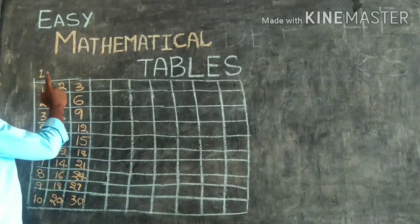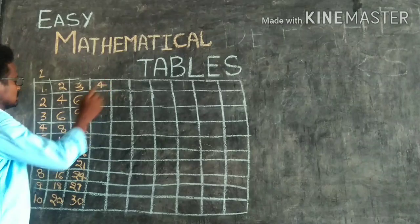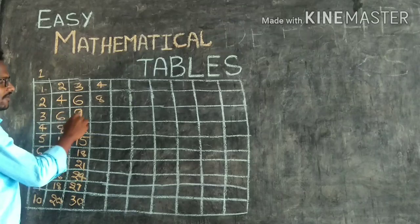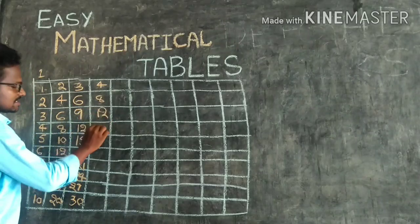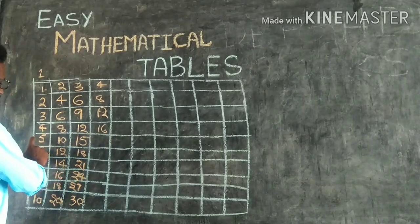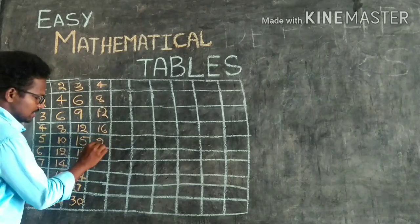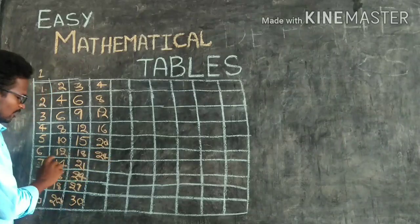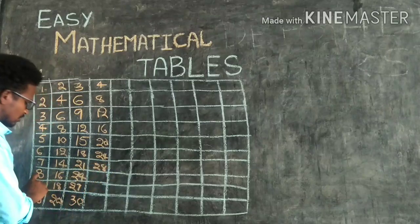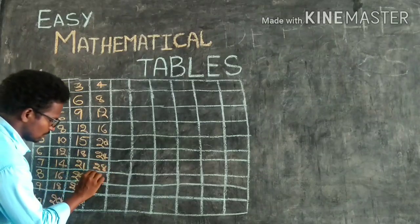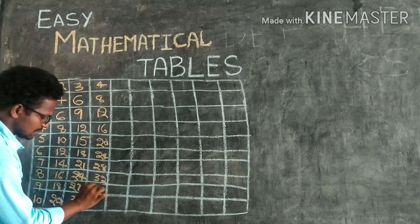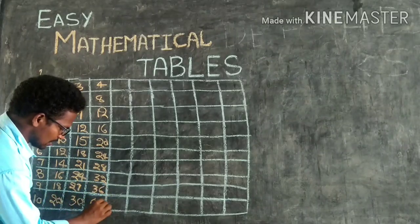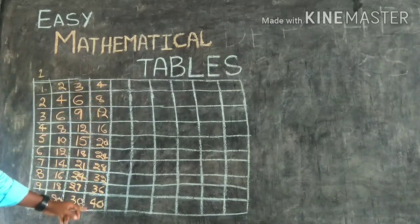Then next, coming to the 4th table. 1st, 2nd, 3rd, 4th box — and so on: 5, 6, 7, 8, 9, 10, 11, 12, 13, 14, 15, 16, 17, 18, 19, 20, 21, 22, 23, 24, 25, 26, 27, 28, 29, 30, 31, 32, 33, 34, 35, 36, 37, 38, 39, 40. This is the 4th table.